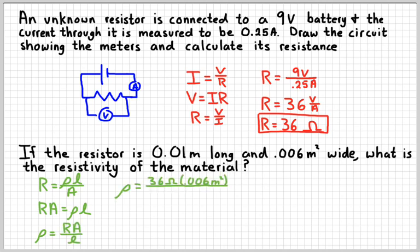Our resistivity would be something like 21.6. And then the units left over would be ohms times meter. That would be our unit. Because the meter squared and this meter would cancel out, ohm times meter would be left over.